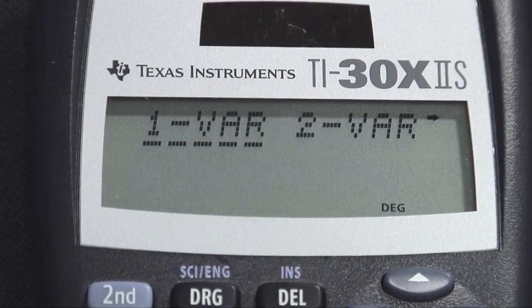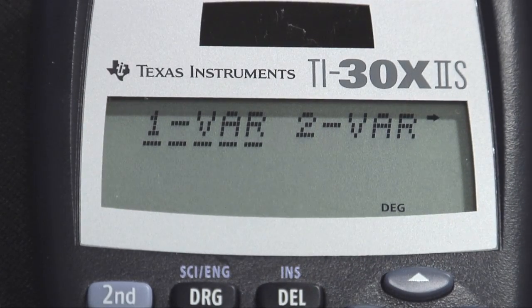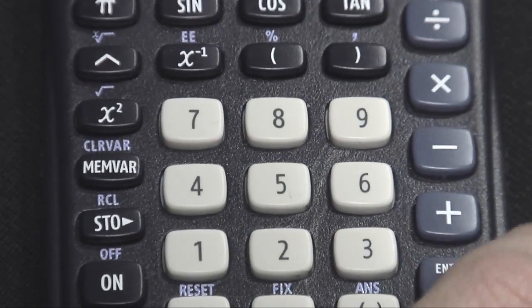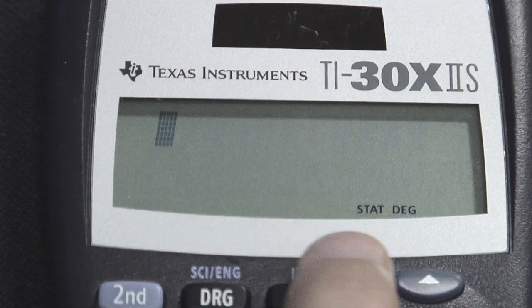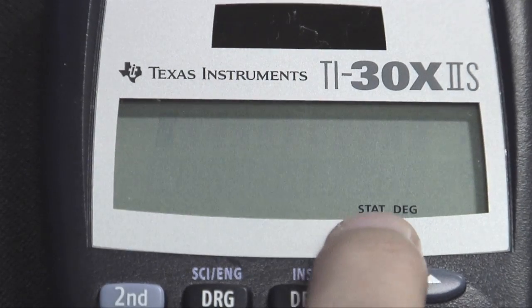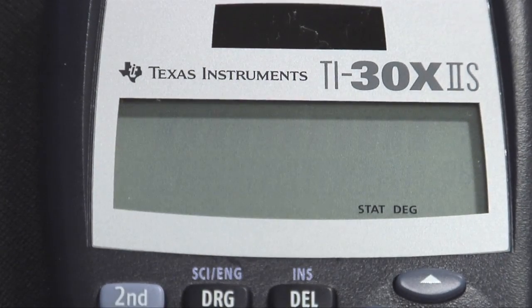And now I can choose one variable, two variable, or some other forms of statistics. I just want one variable, so I'm going to hit enter. And now I see the stat notation at the bottom of the screen, so I know I'm in statistics mode.